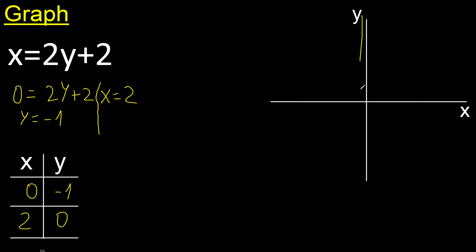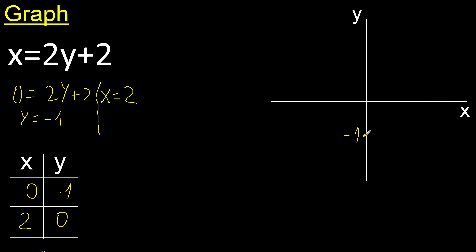Negative, positive, negative — minus 1. x is 0; 0 is here. 0 minus 1: the point is here.